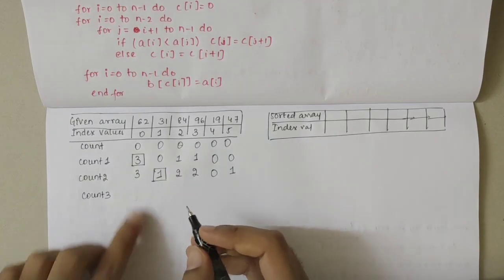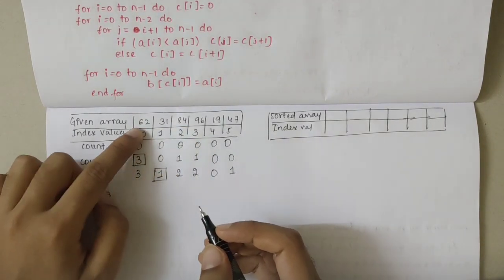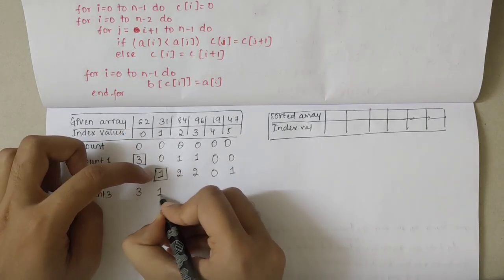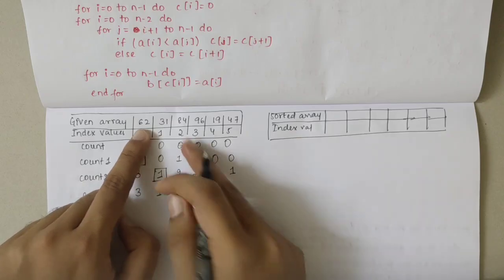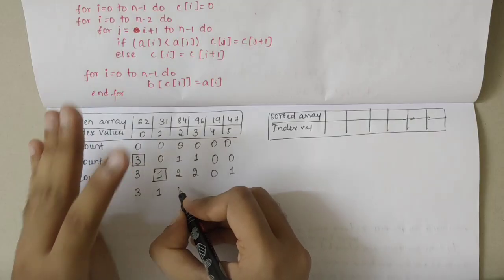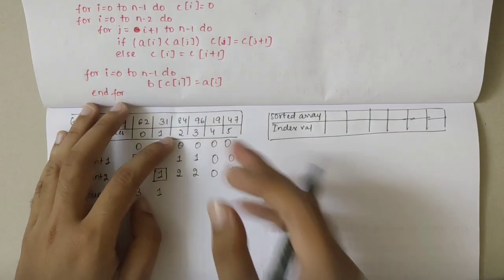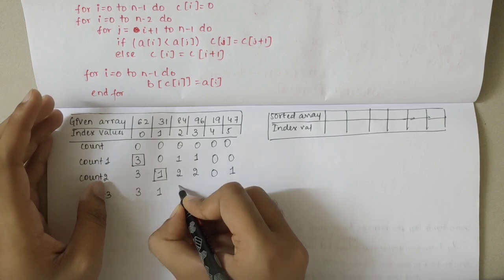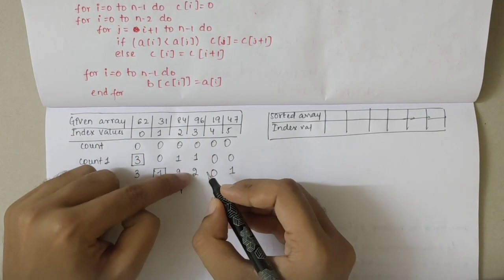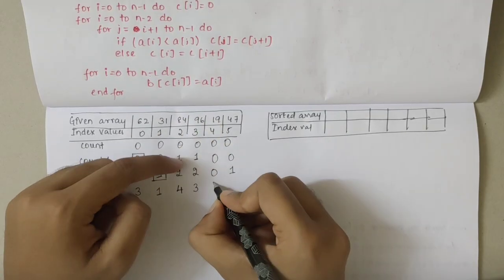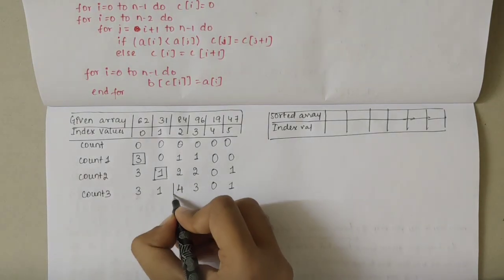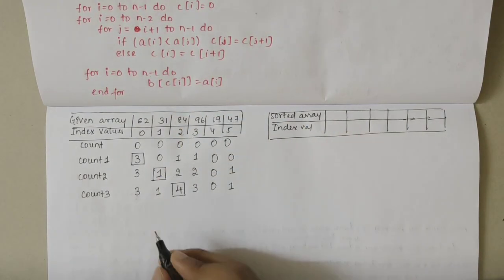In count step 3, we take element 84. 84 is greater than 62, 31, 19, and 47 — four elements total — so we write 4 for 84. 96 is not less than 84, so for 96 we write 2 plus 1 equals 3. For 19 and 47, previous values are retained as 0 and 1. In count step 4, we process 96 — 96 is greater than any number in the list, so previous count values are retained.